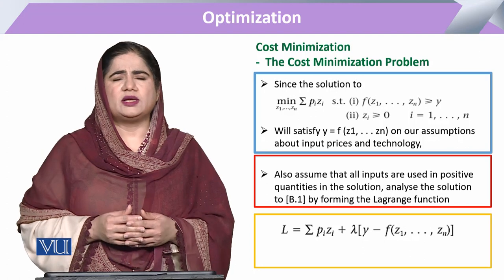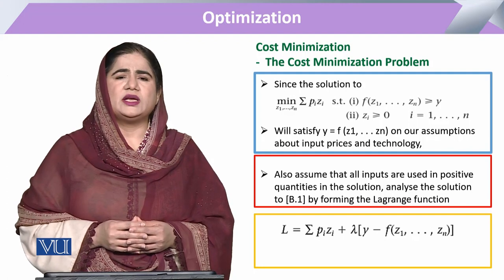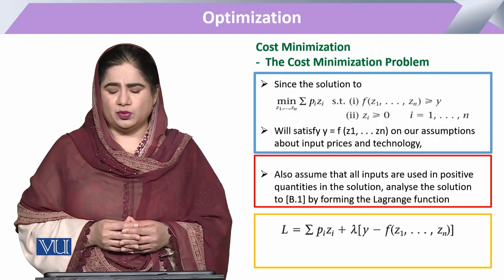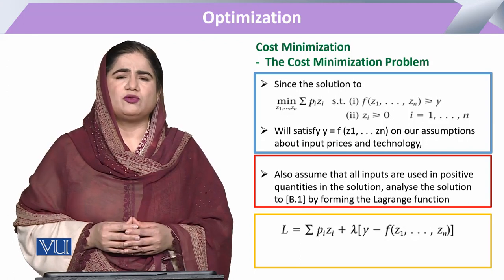There is one example of the Lagrange that we are going to utilize. For that Lagrange, we say that this Lagrange is equal to the submission of output minus all the cost prices that we are dealing with.